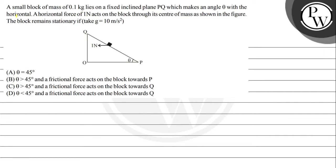Hello, let us see the question. The question says a small block of mass 0.1 kg lies on a fixed inclined plane PQ which makes an angle theta with the horizontal. A force of 1 Newton acts on the block through its center of mass as shown in the figure. The block remains stationary if G is to be taken as 10 meter per second square.